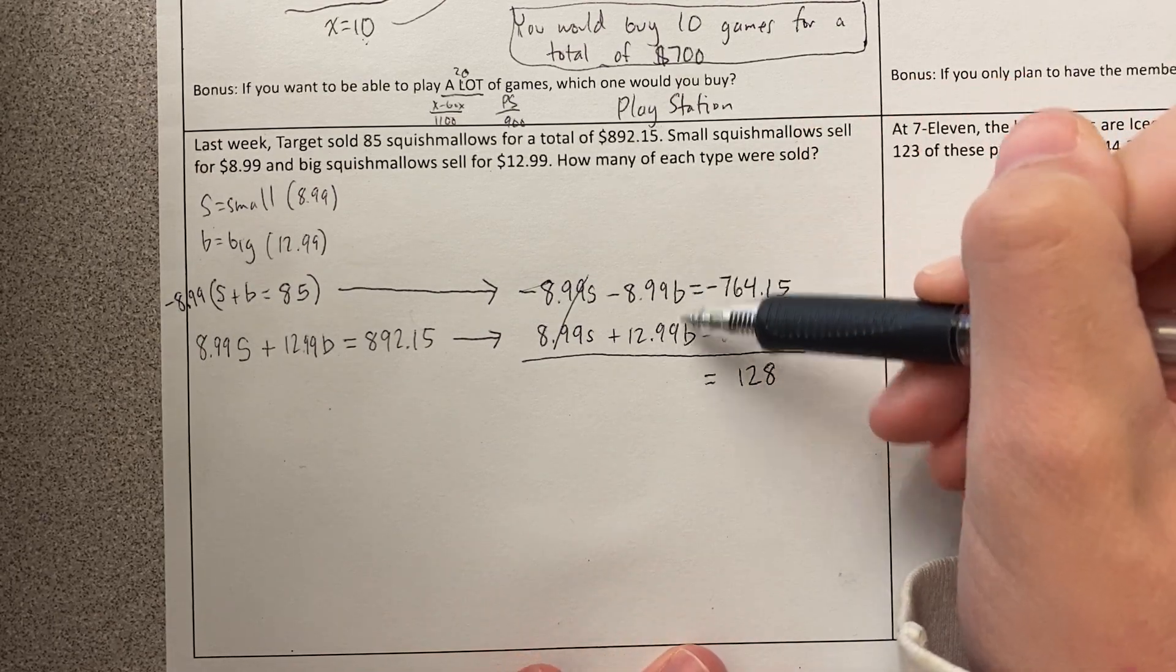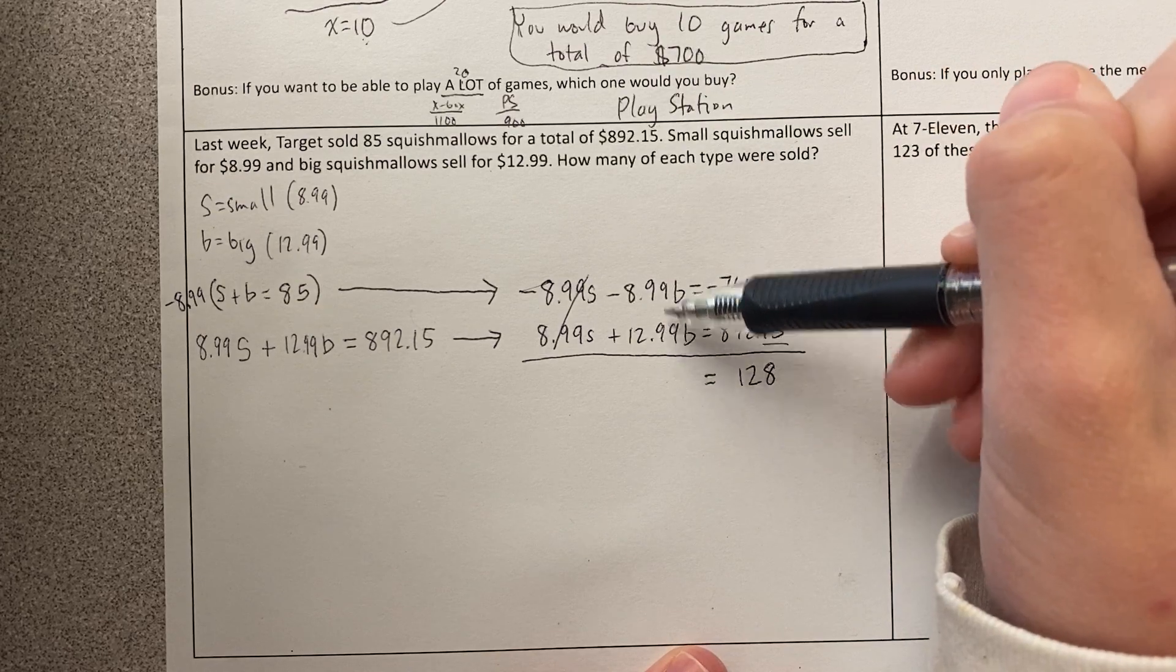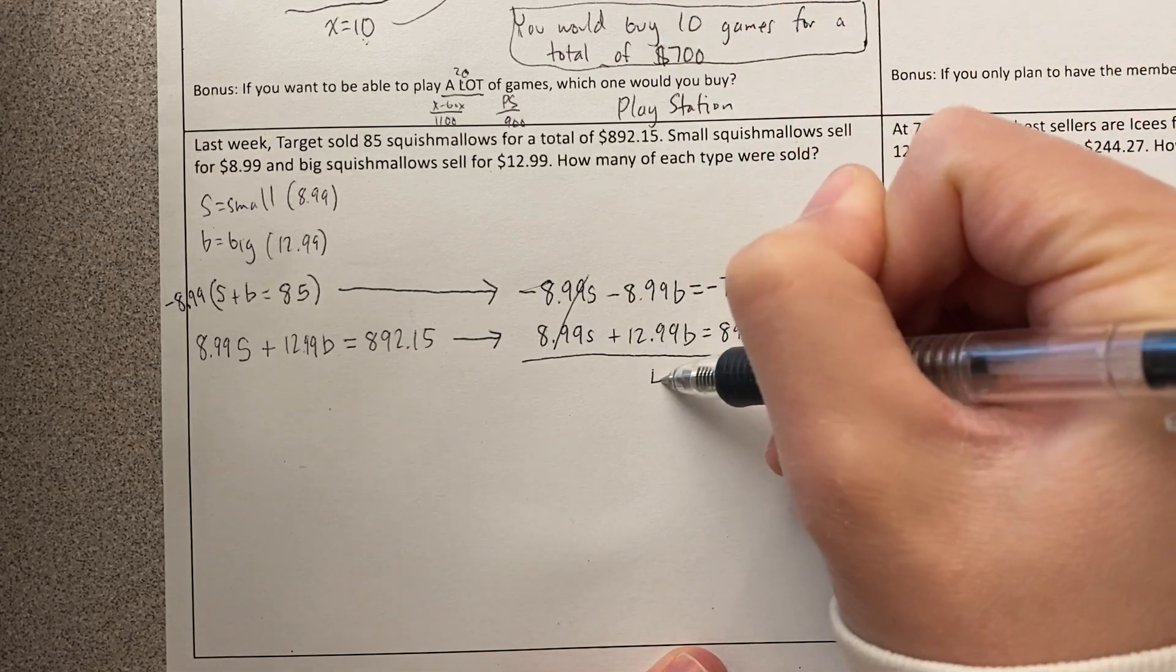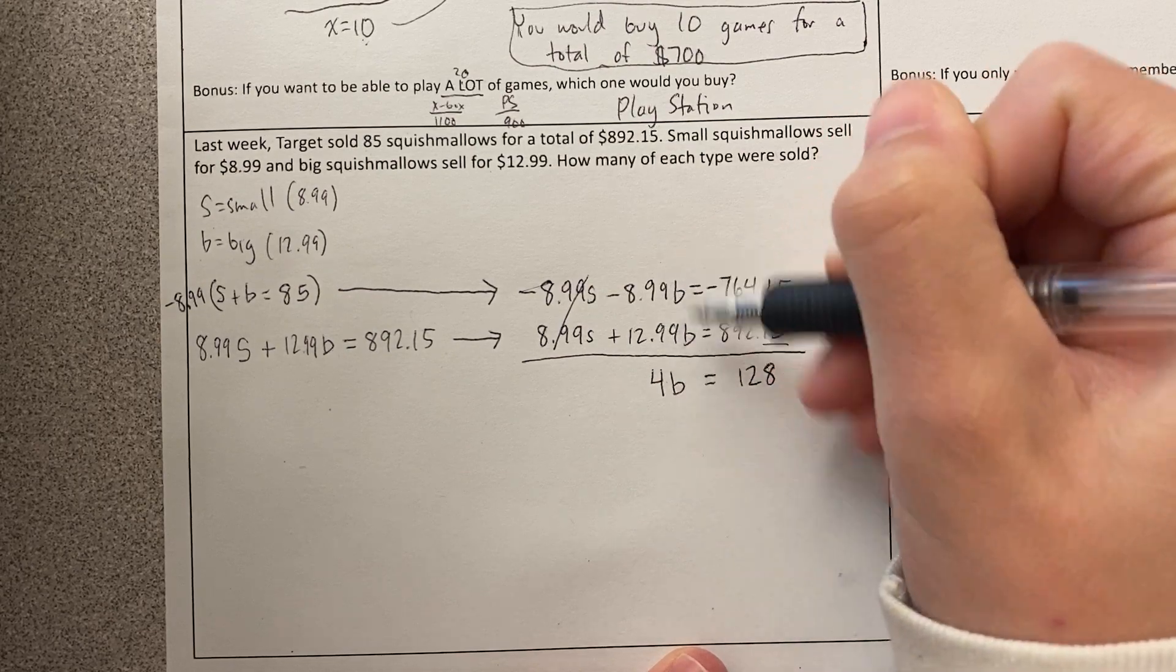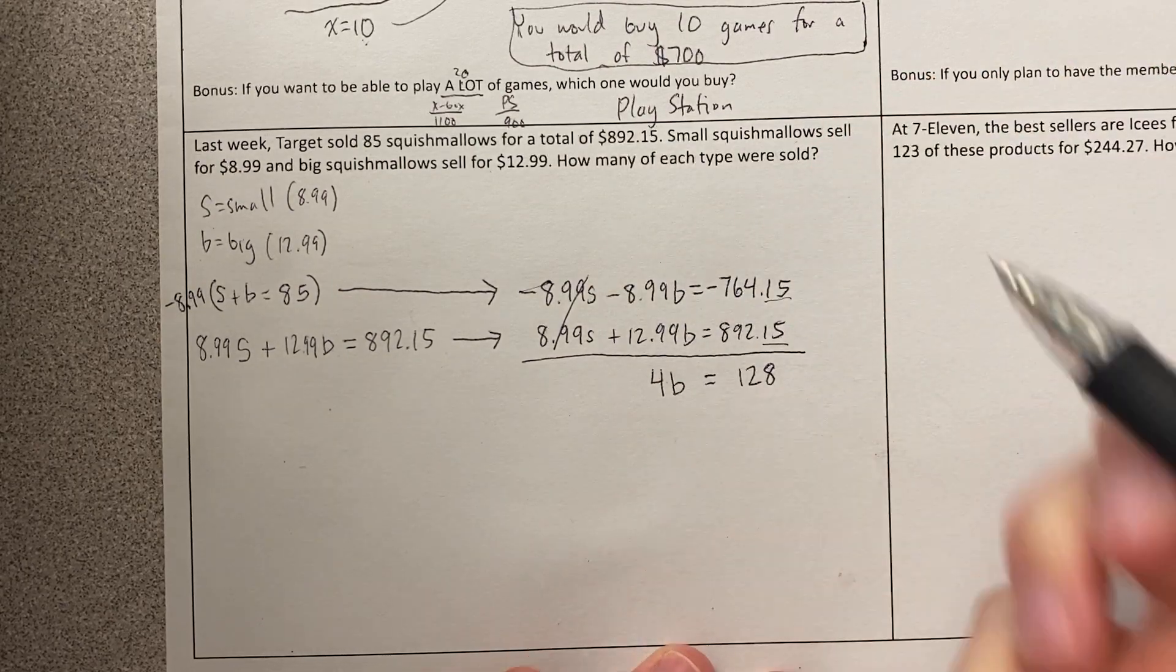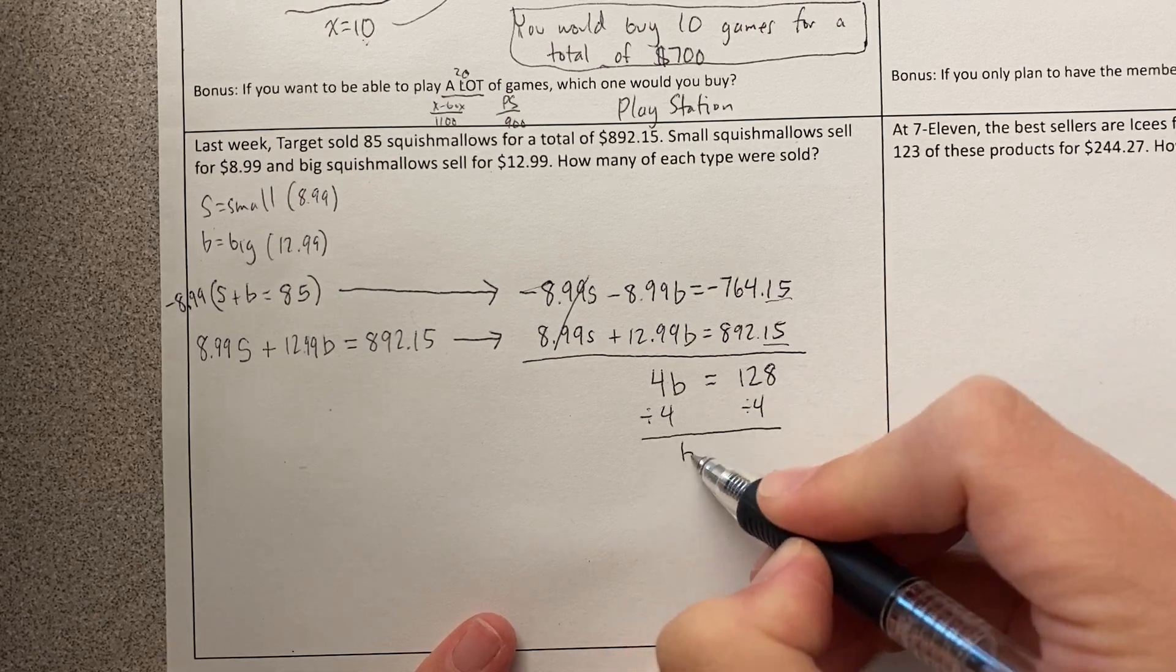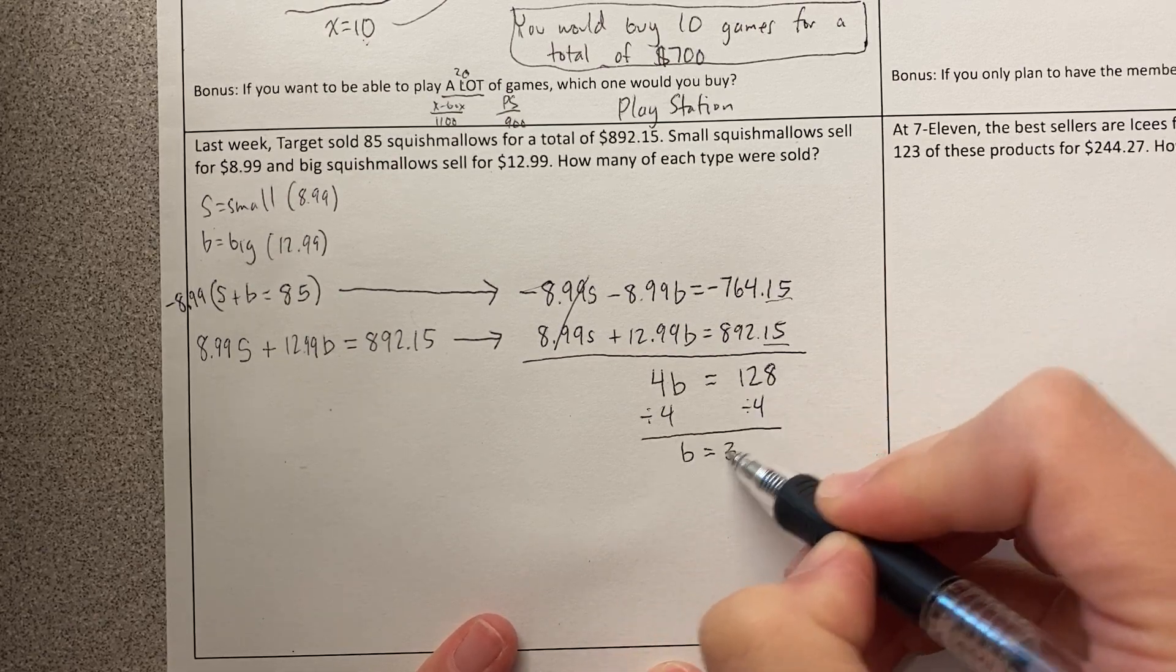Okay. Here, I want to point out to you, I don't really need a calculator for this. 99 cents minus 99 cents, like that just cancels. This is 12 minus 8. That's 4. Okay. Now you could put it in your calculator. That's fine. You'll get the same answer. But this is 4B equals 128. I'm going to divide by 4. And I get B equals 32.